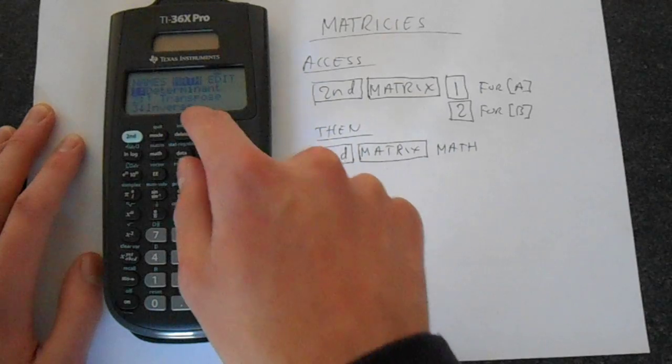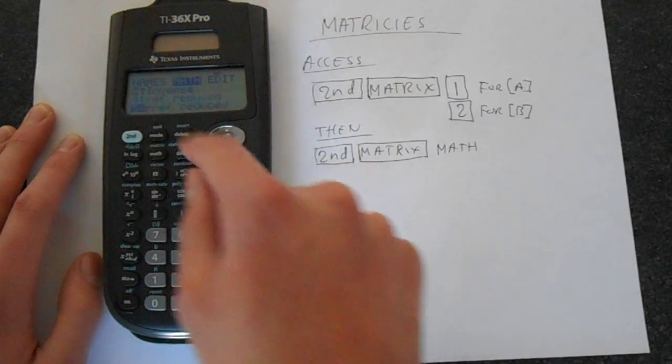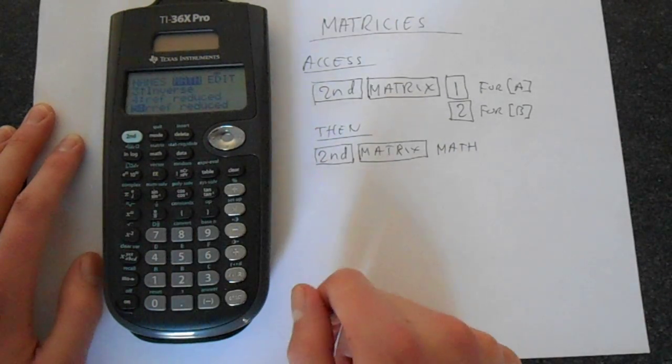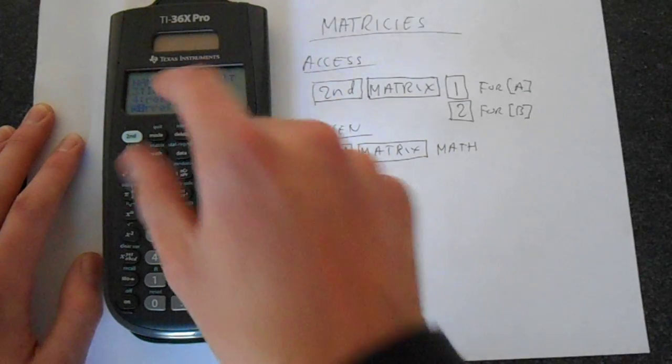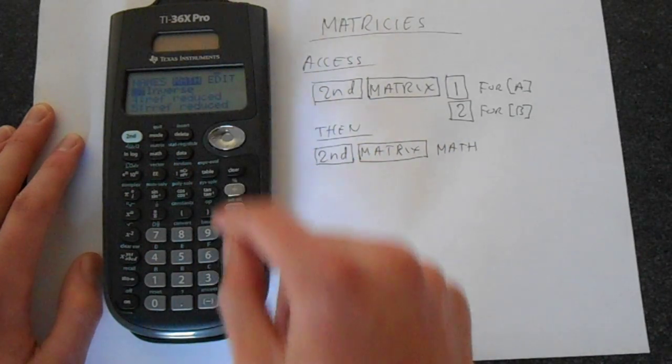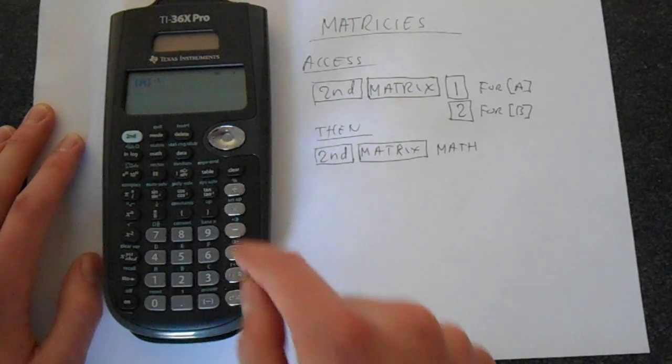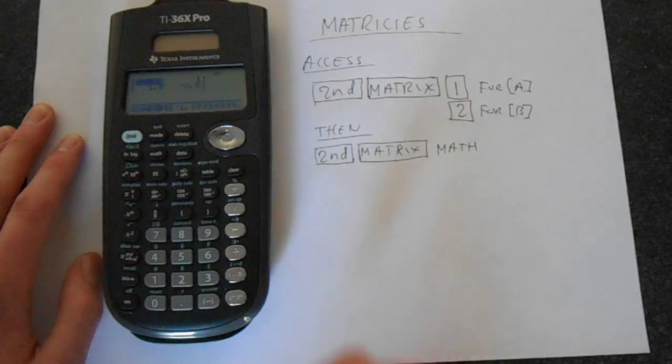we've got the determinant, transpose, the inverse and we've got more complicated row reduced echelon form sort of linear algebra stuff in there. So let's just say we want the inverse. So this is A inverse and it computes the inverse for you.